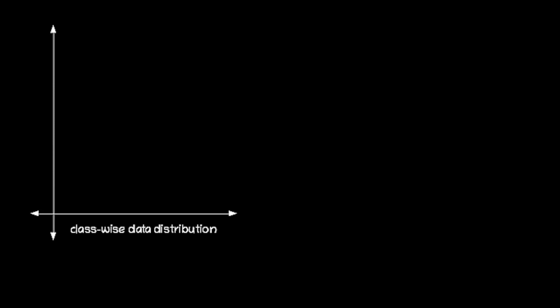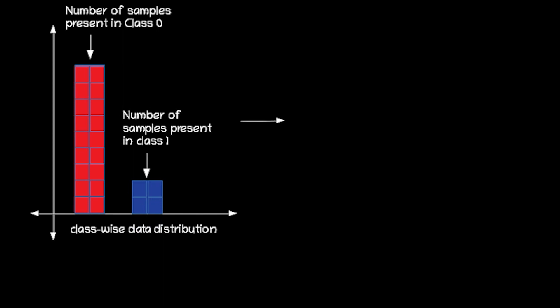Let's visualize data imbalance using a bar graph, in which the red bar represents class 0 which is the majority class and the blue bar represents class 1 which is the minority class. The number of samples belonging to class 0 is comparatively higher than class 1. Let's consider class 0 and class 1 as a red class and blue class for simplification. In a graph representation, we plot data points belonging to the red class as red boxes and data points belonging to the blue class as blue boxes.